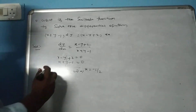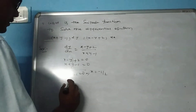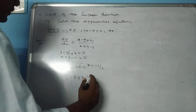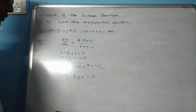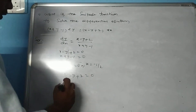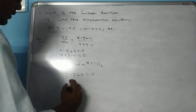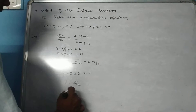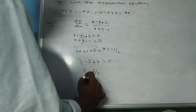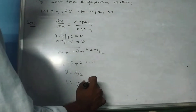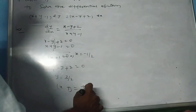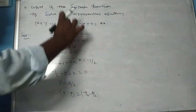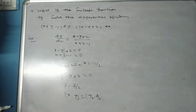Next, substituting x = -1/2 into x minus y plus 2 equals 0: minus 1 by 2 minus y plus 2 equals 0, giving y equals 3 by 2. Therefore, the singular point (x, y) equals (-1/2, 3/2).